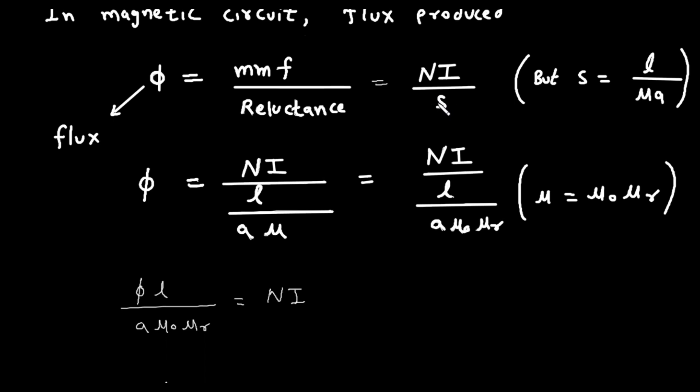Now if we replace this s by l upon mu a, then we get phi equals n i. The numerator part will remain as it is. We are replacing this s by l upon a into mu or mu into a.